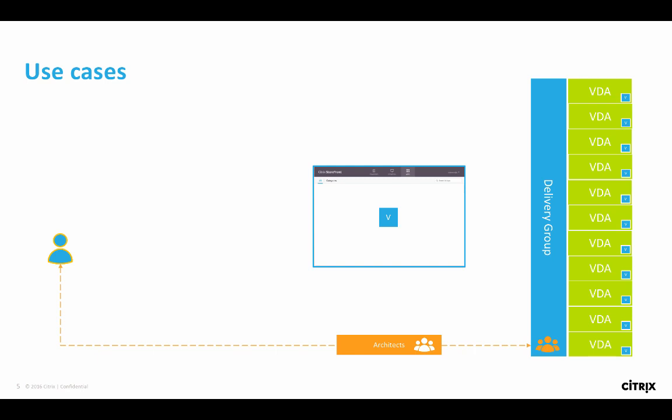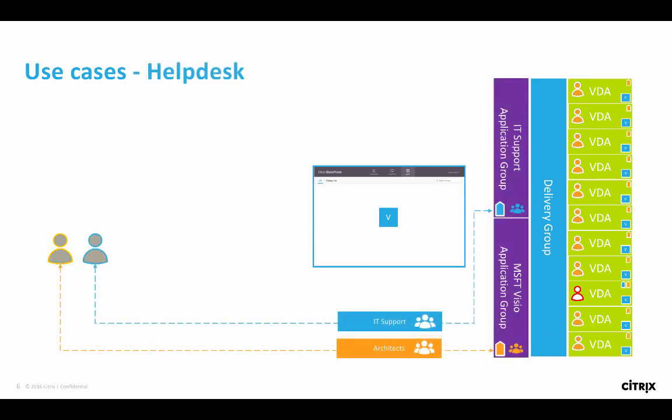I'd like to walk you through a couple of use cases that haven't been possible on the FMA architecture but were possible on 6.5. Today a customer would create a delivery group and as users log on, they are randomly launched on any virtual machines that sit behind that delivery group — randomized based on load evaluators. What happens when a user logs on and the user experience is poor? We get the normal Citrix complaint: it's slow. IT has to try and reproduce this. So how does a user log into Storefront and launch directly to that specific VDA? Well, the answer is it's quite challenging — but with the new model, we can now address that.